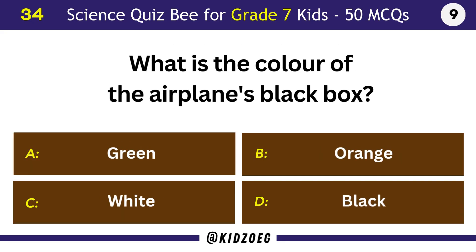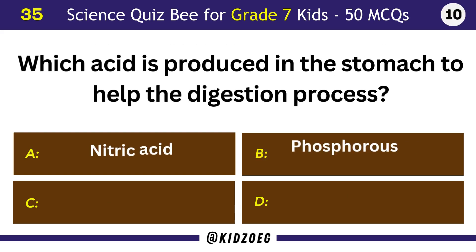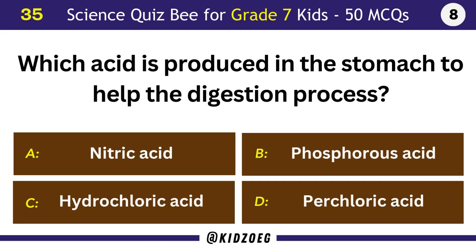What is the color of the airplane's black box? Orange. Which acid is produced in the stomach to help the digestion process? Hydrochloric acid.